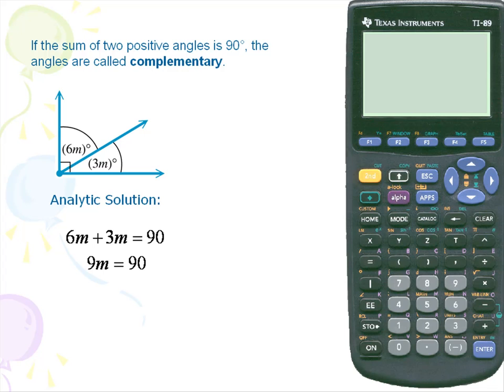We'll combine like terms on the left-hand side. We'll divide by 9. Therefore, m is equal to 10.